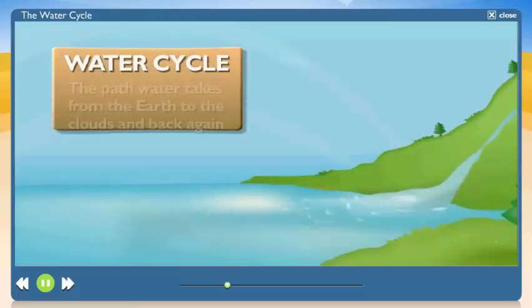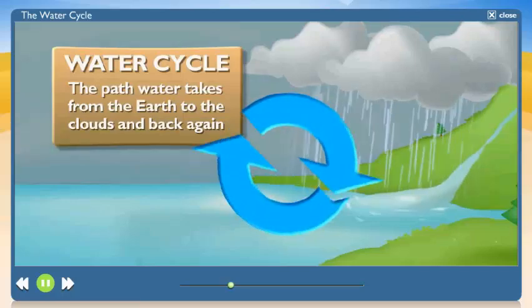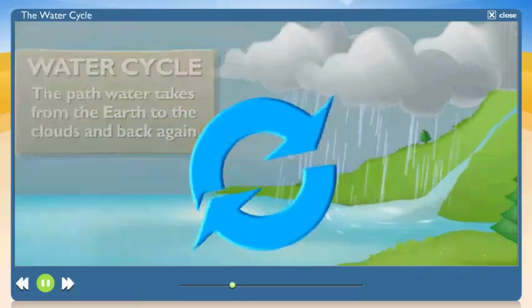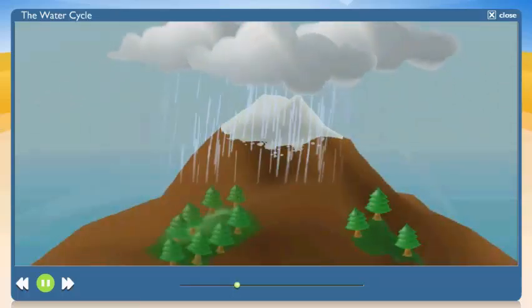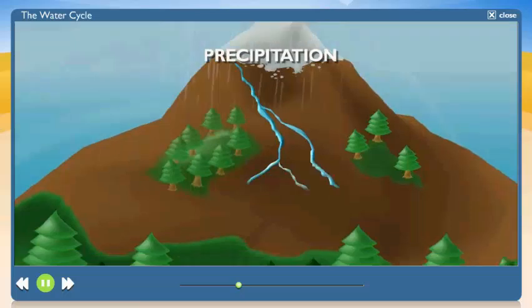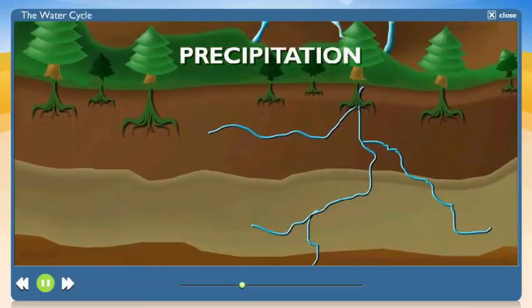The water cycle is the endless path that water takes from the earth to the clouds and then back to the earth again. We already talked about precipitation. Like this rain. Right. Well, when precipitation falls from the sky, it fills the lakes, rivers, and oceans, runs down the mountain, and soaks into the soil.